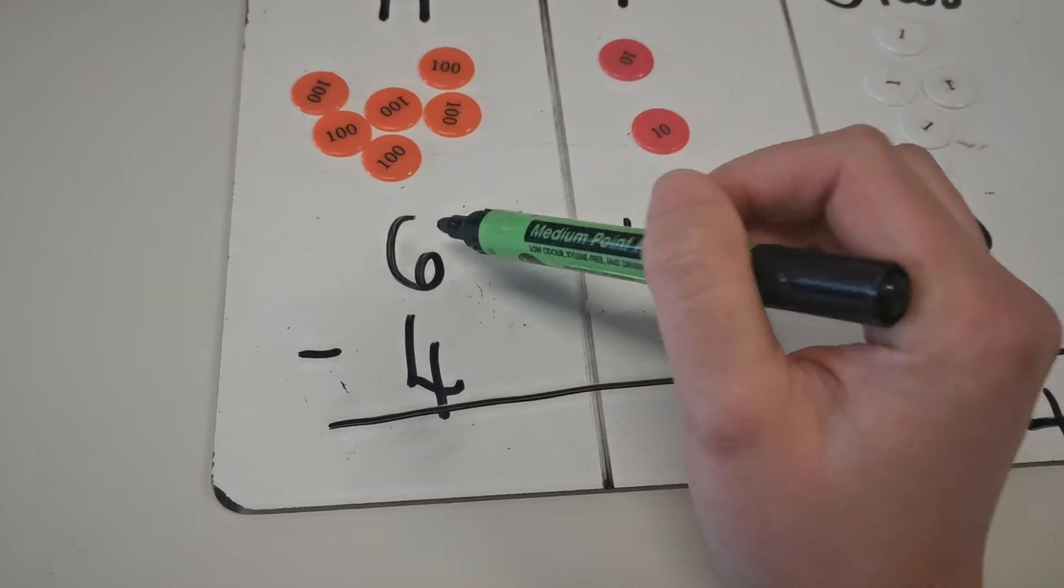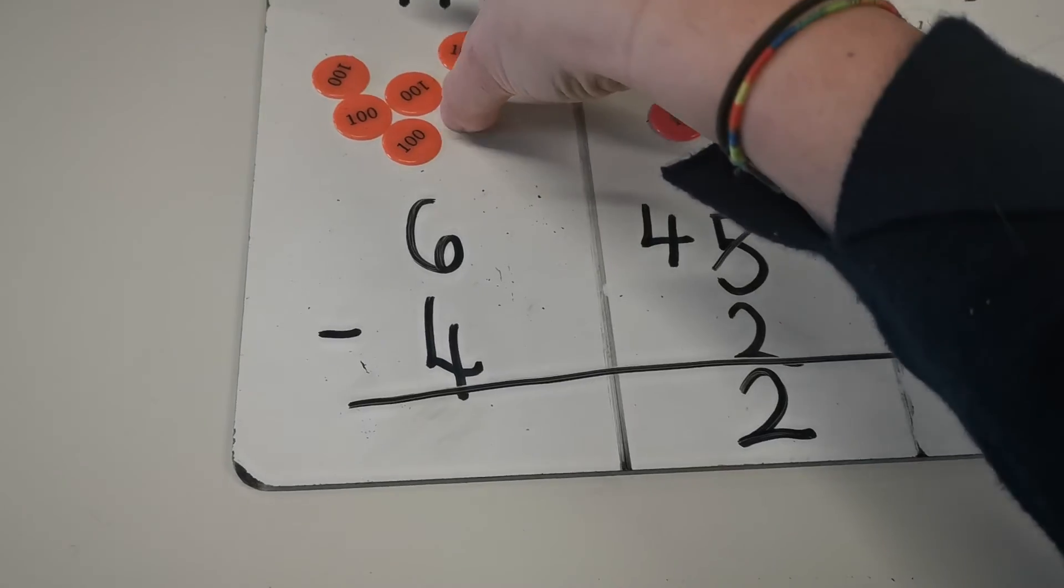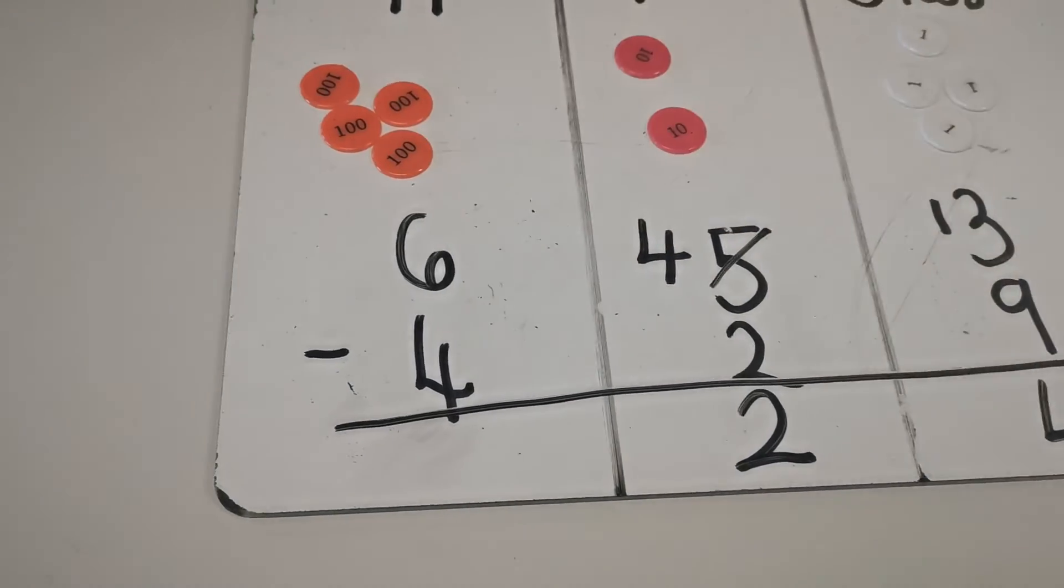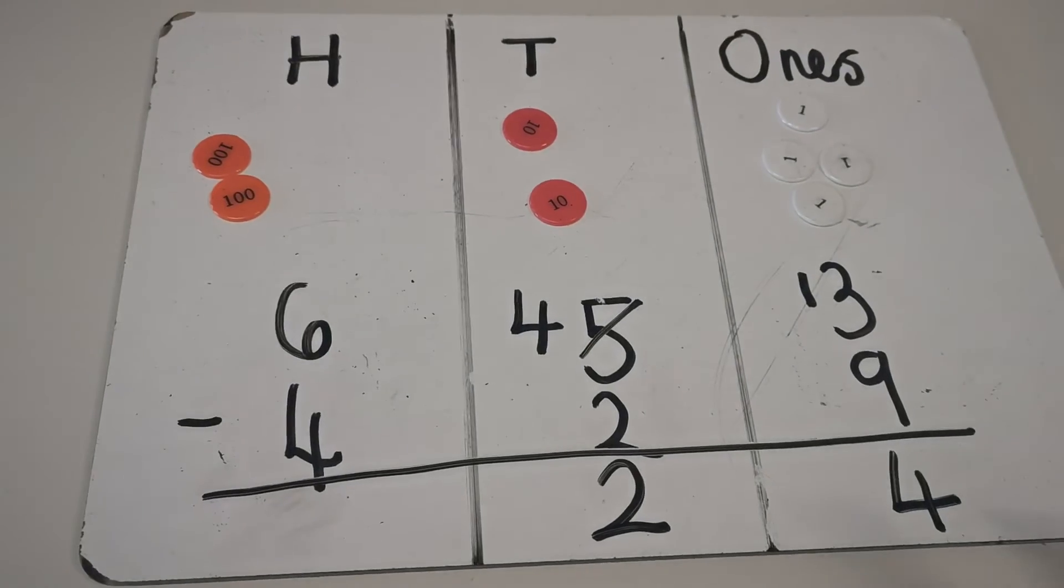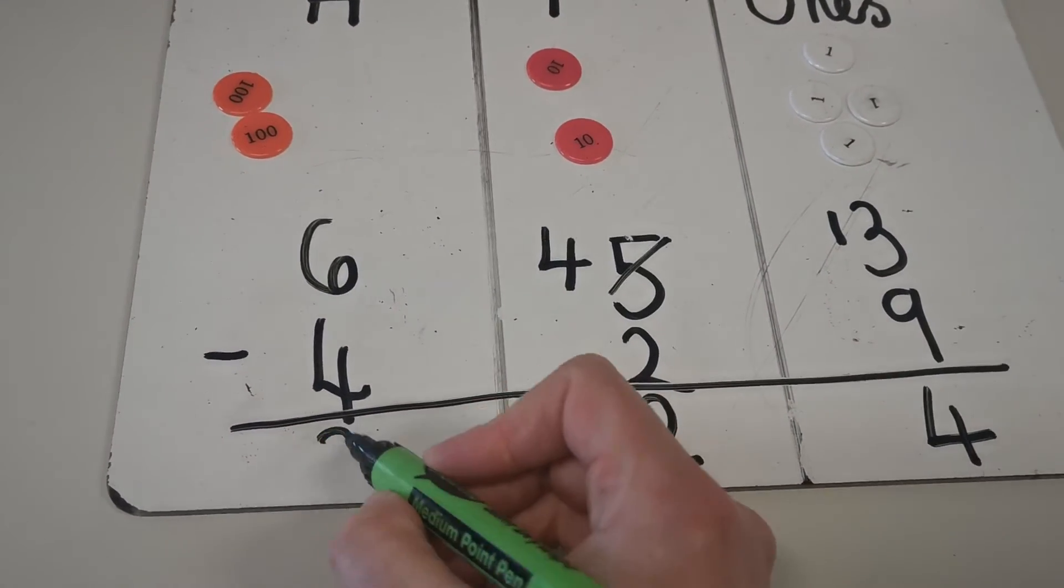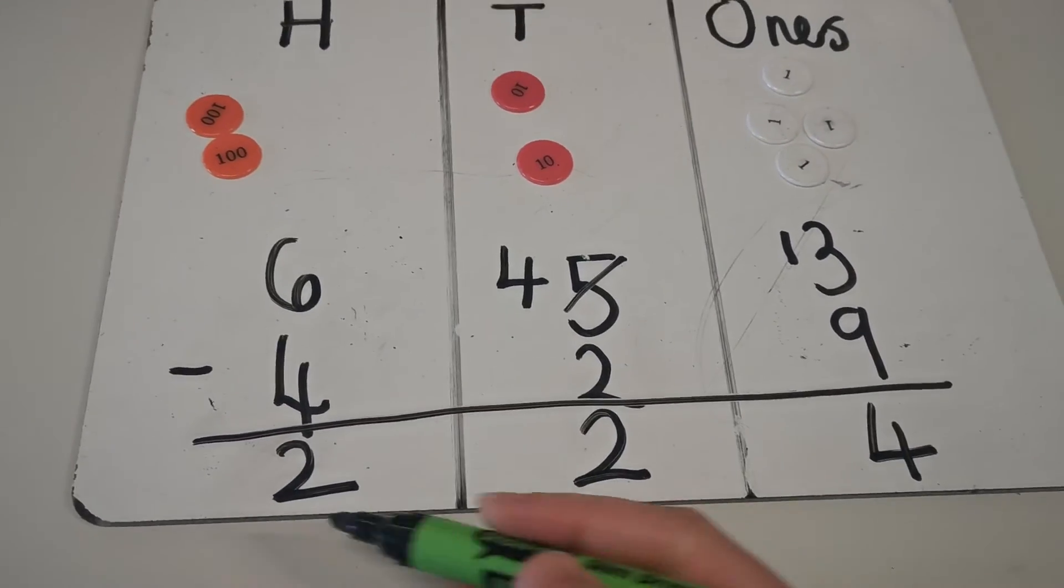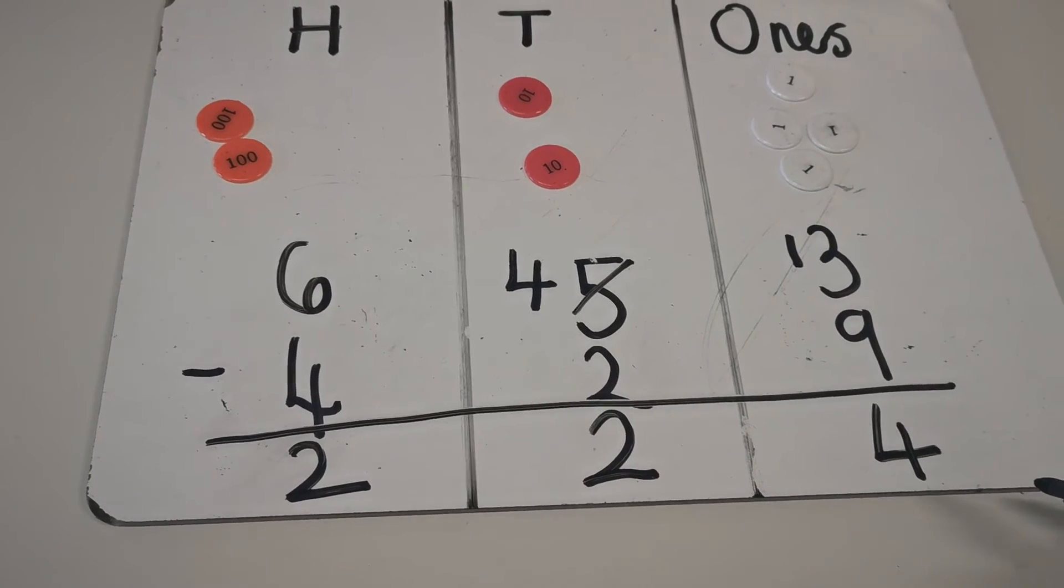Then I've got 600 and I need to subtract 400. So I'm going to go 1, 2, 3, 4. And I'm left then with 200. So the answer to my question is 224.